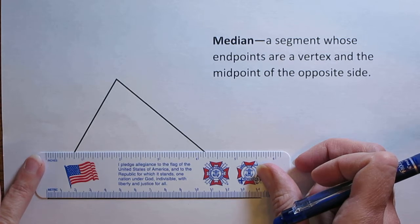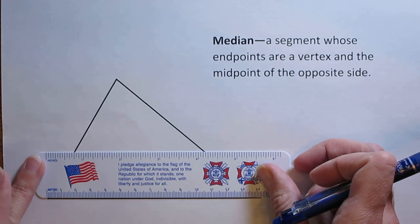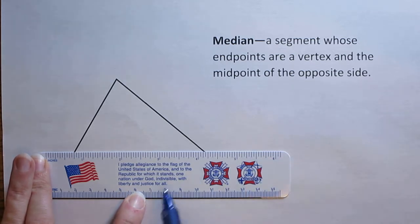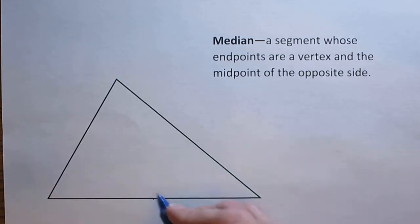This side looks to be just a bit beyond 14 cm. So half of that is going to be just a hair over 7 cm. I'm going to make a mark there, there's my midpoint. And then I'm going to take that midpoint and connect it to the opposite vertex.